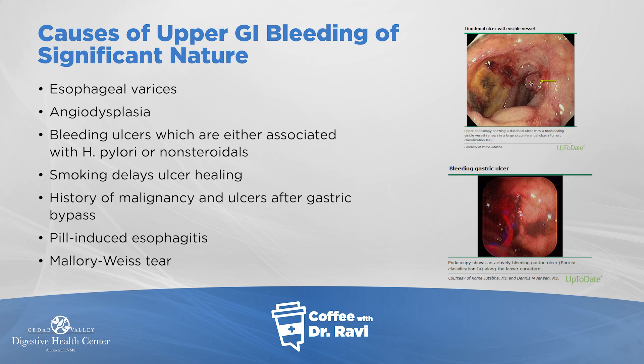Common causes of bleeding when people come into the hospital include ulcers in the stomach or duodenum, which is the first portion of the small bowel. Esophageal varices are conditions that come from liver disease — similar to the veins on the back of your hand, but located in the food pipe. They get bigger and bigger with liver disease and can burst open, causing severe bleeding. Cancer can also present as GI black stool, pills getting stuck in the esophagus can cause irritation, and when someone vomits forcefully, it can cause a Mallory-Weiss tear — a cut on the inside of the esophagus.